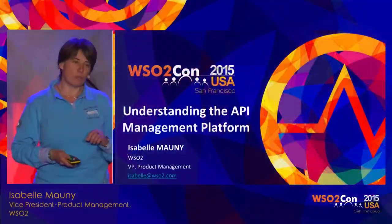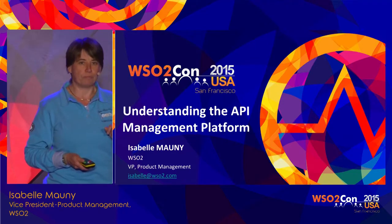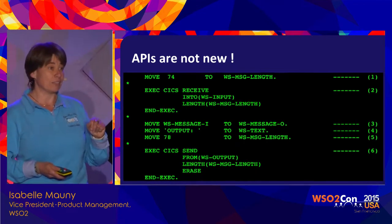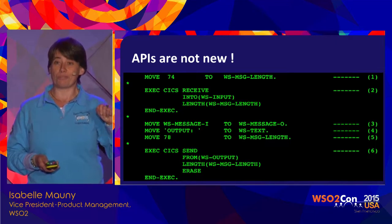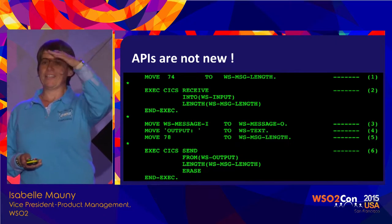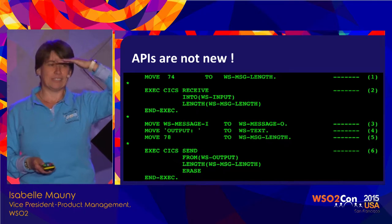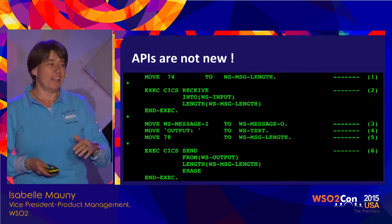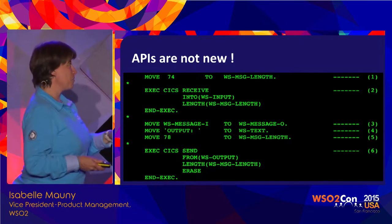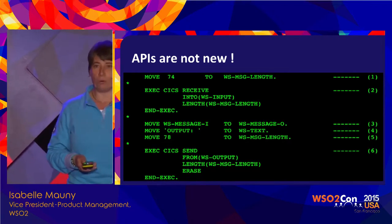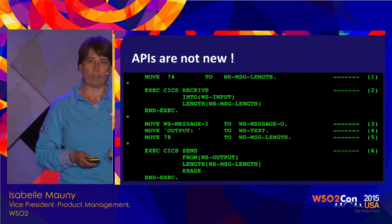I'm going to start by showing you some code. Who recognizes this? It means you're old enough, like me. For those of you who don't recognize it, this is COBOL — a transaction call — and I'm going to make this bold claim: this is an API call.